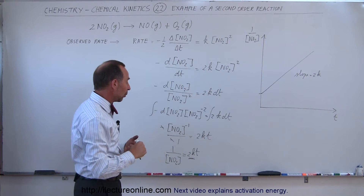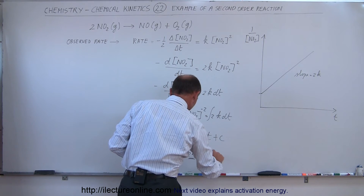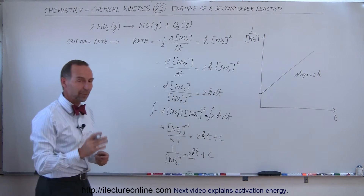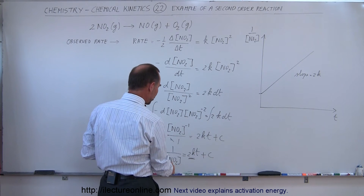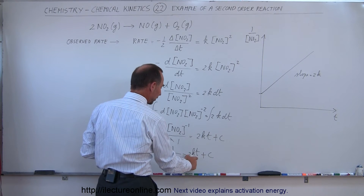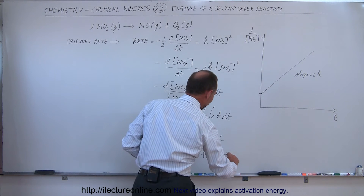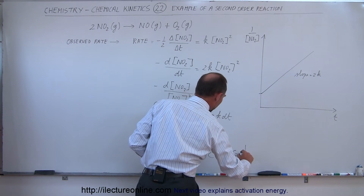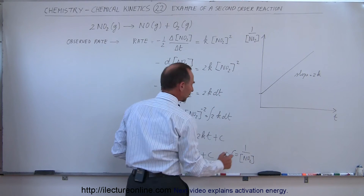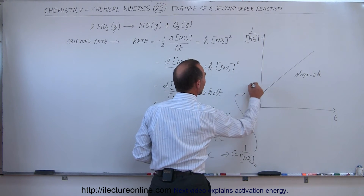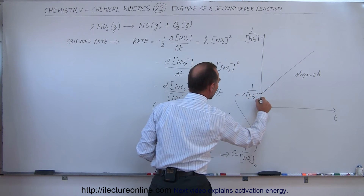I need to add the constant of integration. We know that when t equals zero, the concentration of nitrogen dioxide equals the initial concentration, so the constant C is equal to one over the initial concentration of nitrogen dioxide. This gives us: one over the concentration of nitrogen dioxide equals 2kt plus one over the initial nitrogen dioxide concentration.